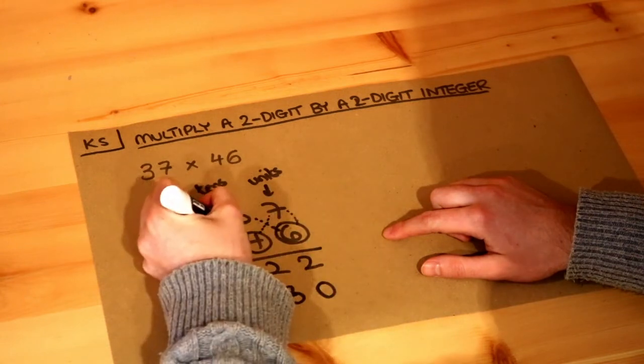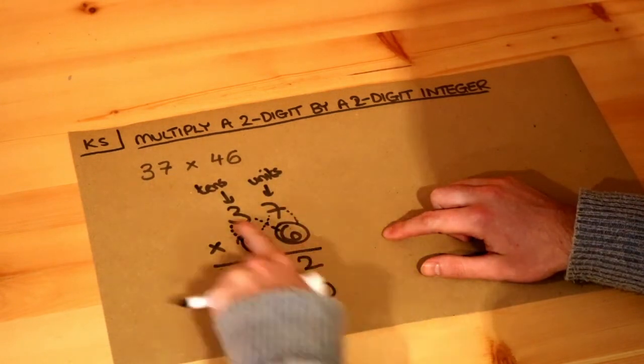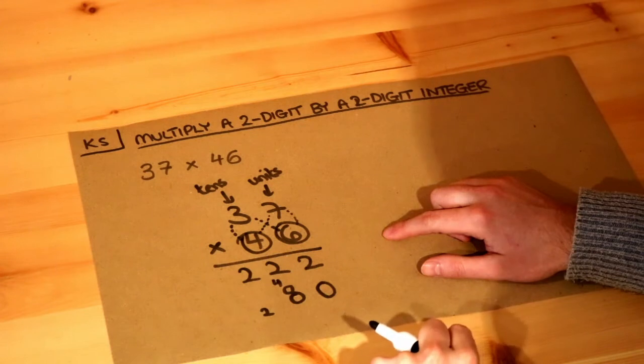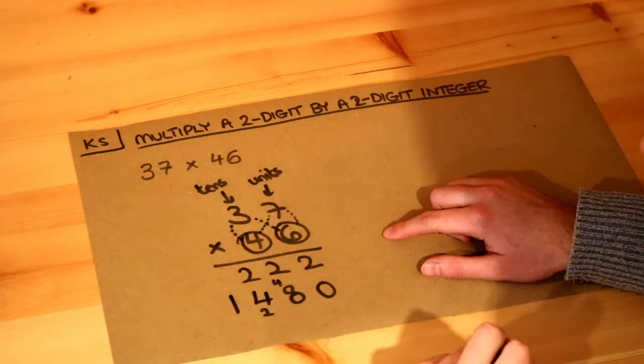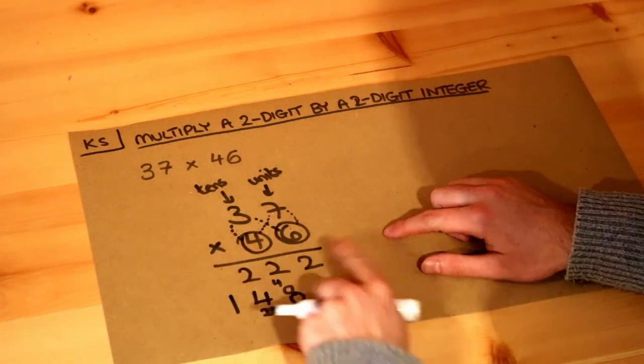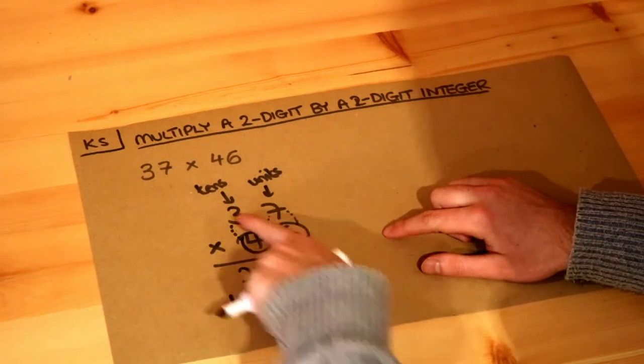Then we do 3 times 4—we go from right to left, by the way. 3 times 4 is 12, plus the 2 is 14. Now we've got 6 lots of 37, which is 222, and 40 lots of 37, which is 1480.